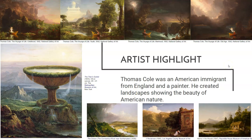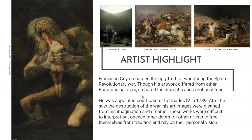Through his art, Thomas Cole was saying: you in Europe have your old castles and ancient history, but in America, look at this beautiful, amazing scenery. At the same time, we have the Spanish painter Francisco Goya. His artwork isn't exactly romantic, though it does have a dramatic and emotional tone. After he saw the destruction of war, his art images were gleaned from his imagination and dreams — we kind of see his nightmares coming out in his artwork.